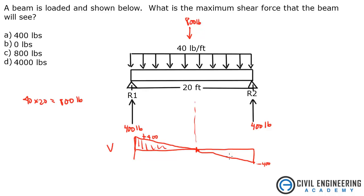So you can see that the maximum shear that is developed in this beam is actually 400. It doesn't matter if it's plus or minus. The max is 400 pounds, which the answer to that is A.